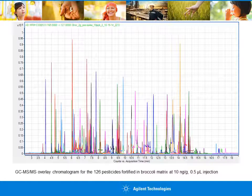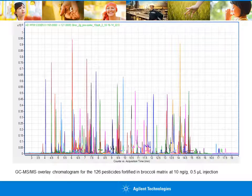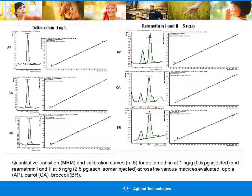This study used three matrices — apple, carrot, and broccoli — to assess the miniaturized QuEChERS method for routine multi-residue pesticide analysis. 126 commonly monitored pesticides by GC-MS/MS were chosen. The figure shows a representative overlay of chromatograms for a fortified broccoli matrix with 126 pesticides at 10 nanograms per gram. Calibration standards for a mixture of 126 pesticides and groups of pesticide isomers were prepared by spiking the extracted blank matrix at 1, 5, 10, 20, 50, and 100 nanograms per gram. The figure indicates the precision of the method.